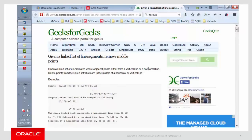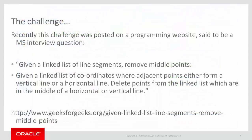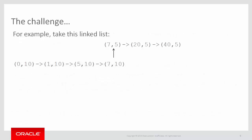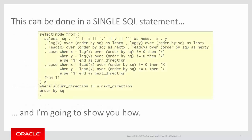Here's the programming challenge, from the Geeks4Geeks website. The challenge is: given a linked list of line segments, remove the middle points. In other words, given a linked list of coordinates where the adjacent points either form a vertical line or horizontal line, delete points from the linked list which are in the middle of a horizontal or vertical line. This was said to be a Microsoft interview question.